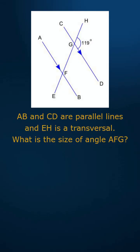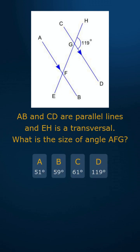AB and CD are parallel lines and EH is a transversal. What is the size of angle AFG? A, B, C or D?